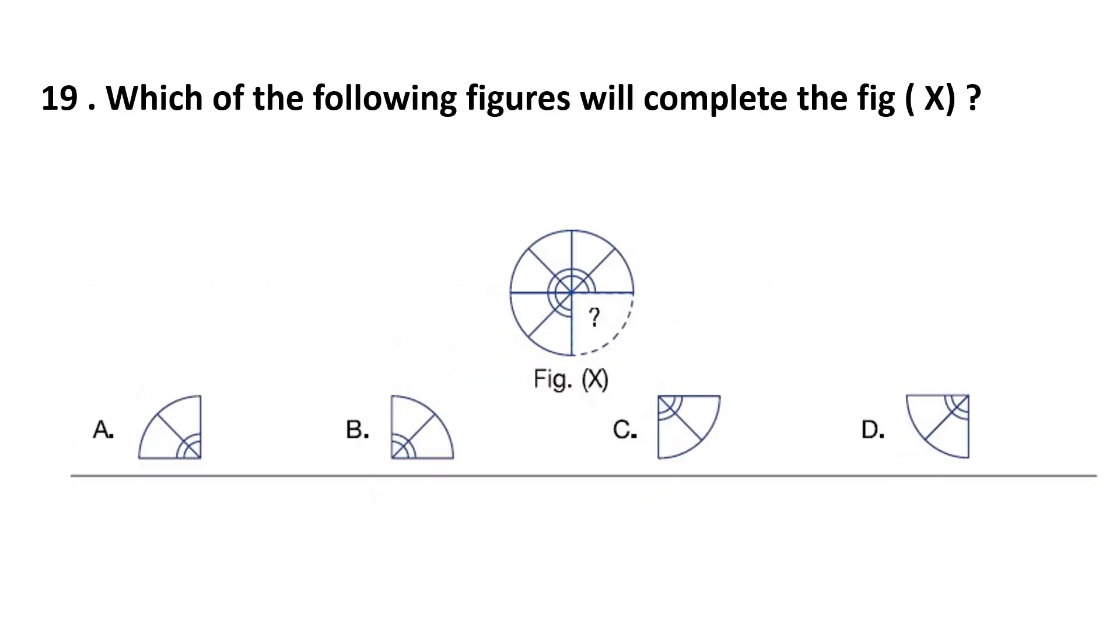Question number 19. Which of the following figures will complete the figure X? This figure X is given and here a circle will complete. One line will be here and two lines will be here. So answer is option C because this is in correct shape.